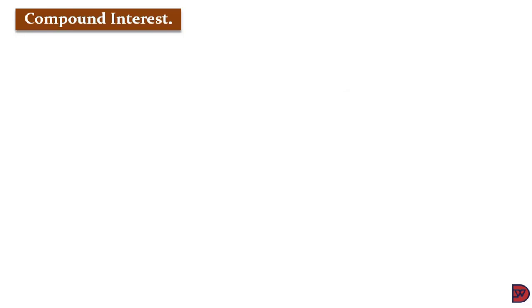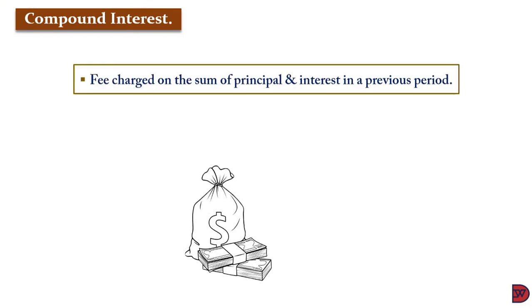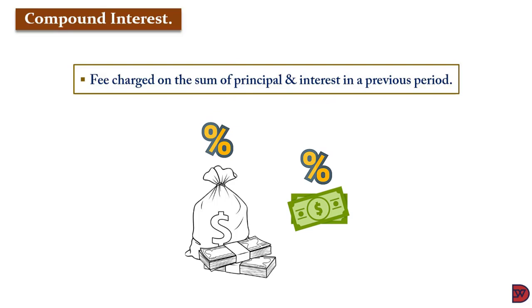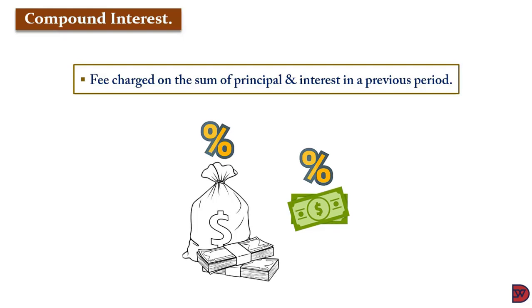In the previous session we learnt that only the principal earns interest. In a compound interest scenario, the principal — in addition to the interest already earned — also earns interest. So you sum the principal with the accumulated interest at that point, and the percentage is applied to that combined amount.